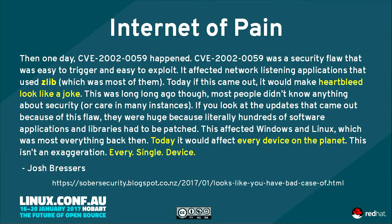I got this quote off LWN a few weeks ago. There was a zlib compromise back in 2002. If it occurred today, it would make Heartbleed look like a joke. Back then it affected Windows and Linux. Today it would affect every device on the planet — every single device. That was a painful thing to resolve then. Can you imagine if a leading open source project that we rely on today — built into the Internet of Things devices within your household — had a similar level of compromise? Every router. Every mobile phone. Every television. Your smart fridge. Your car.